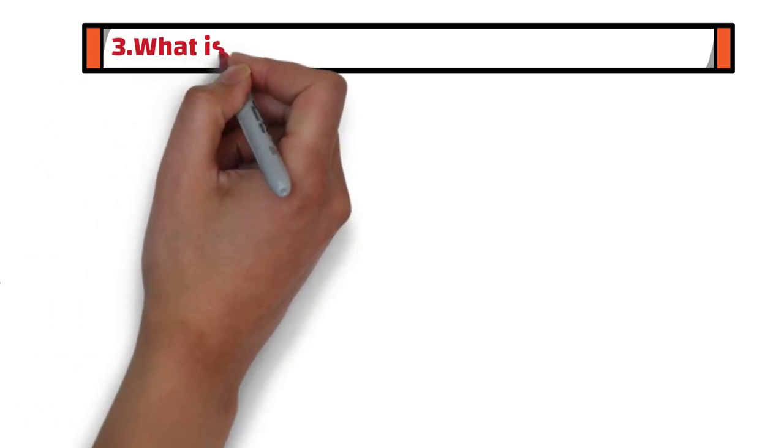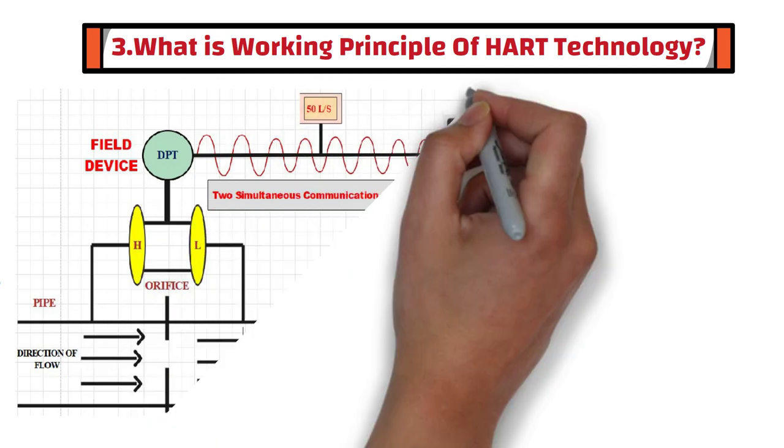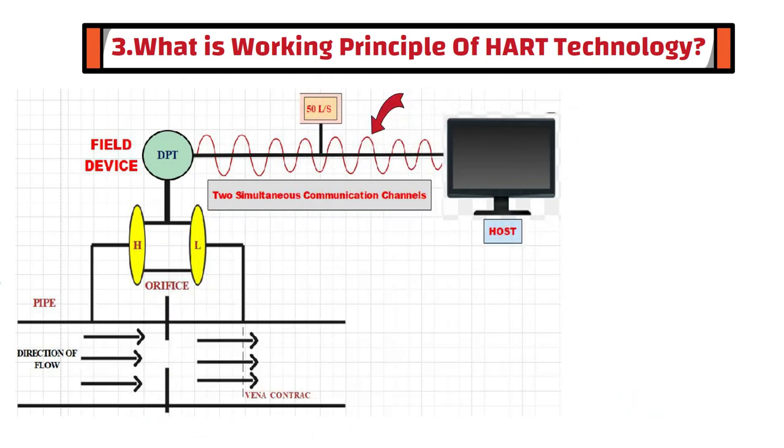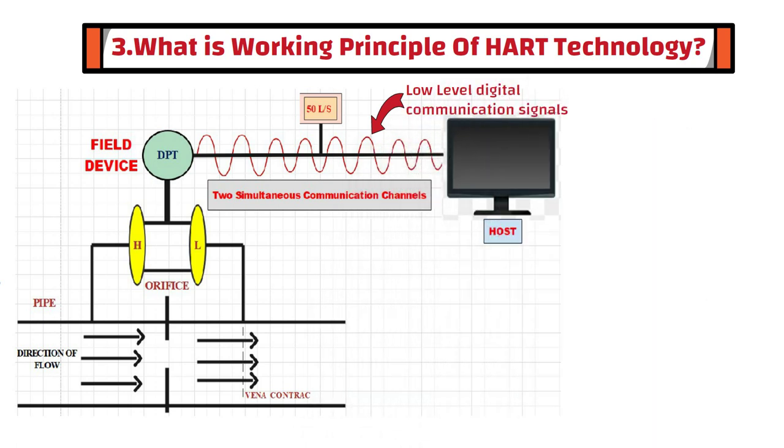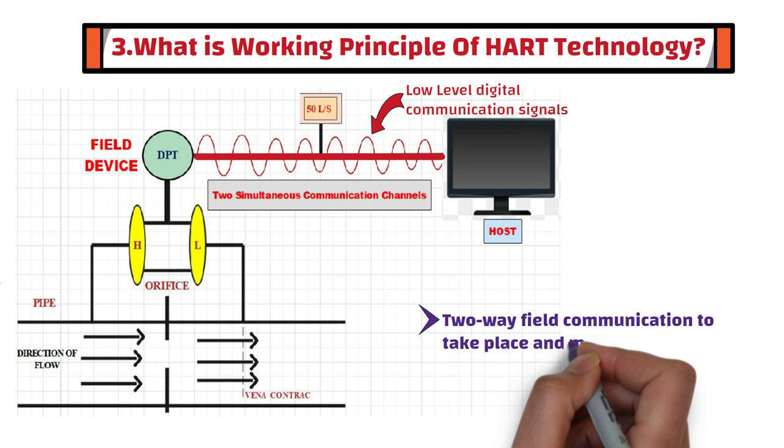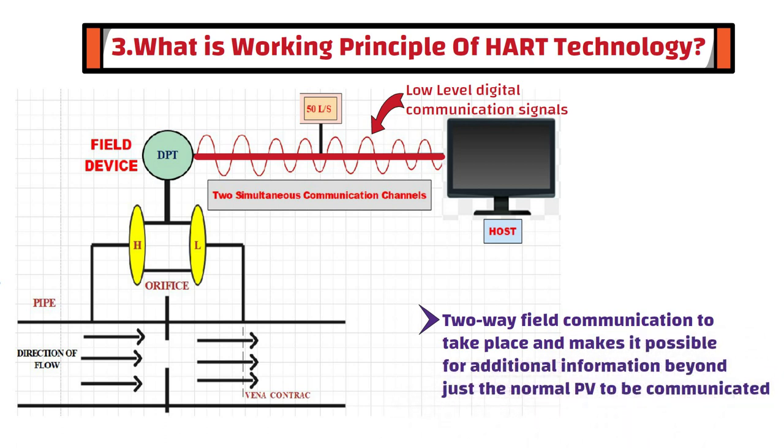Third question is, what is the working principle of HART technology? The HART communication protocol uses frequency shift keying standard to superimpose low-level digital communication signals on top of the 4-20 mA analog signal. This causes two-way field communication to take place and makes it possible for additional information beyond just the normal process variable to be communicated to and from intelligent field devices.